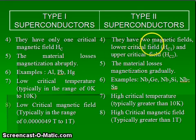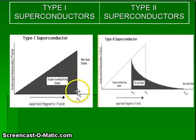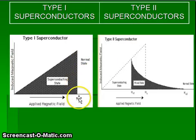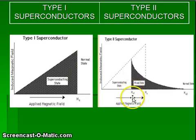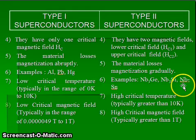These are called the lower critical field and the upper critical field. As you can see in this diagram, in case of type 1 it has only one critical magnetic field, while in case of type 2 it has two critical magnetic fields, HC1 and HC2.